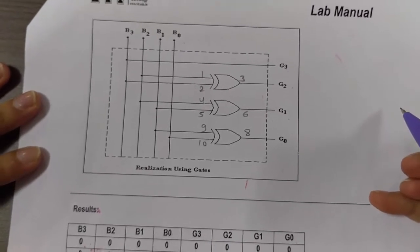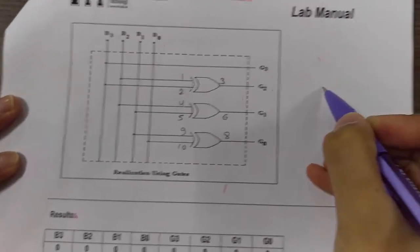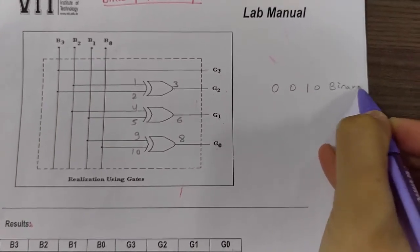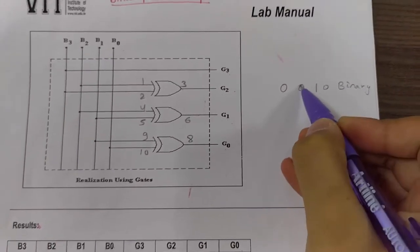Now let's see how to convert binary to grey code mathematically. Let's take one example: 0010. This is in binary. Now to convert it into grey code, we write it like this.